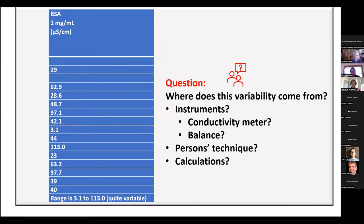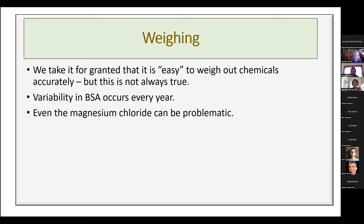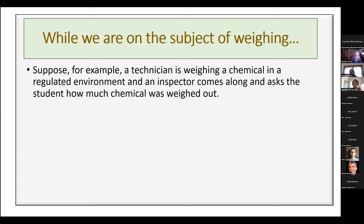BSA is really variable every year. We suspect conductivity isn't the best method to measure variability in BSA, but we also know BSA is very difficult to weigh — it's powdery, it develops static charge. It's a classic example of something difficult to weigh, and it reveals all the problems with weight measurements. We take for granted that weighing chemicals accurately is easy, but that's not always true.